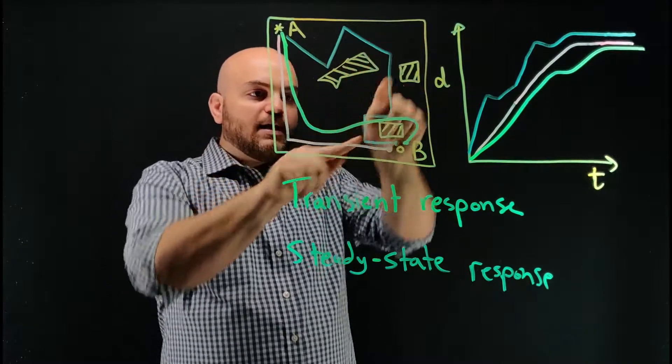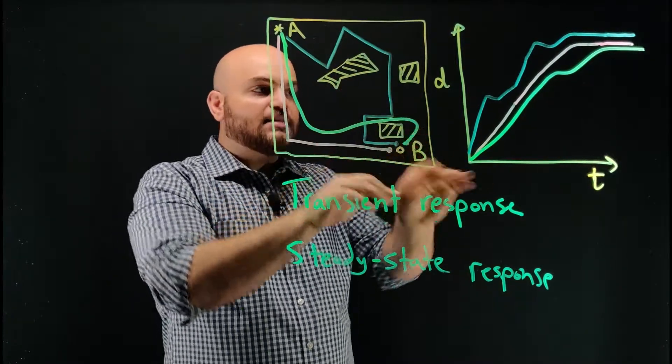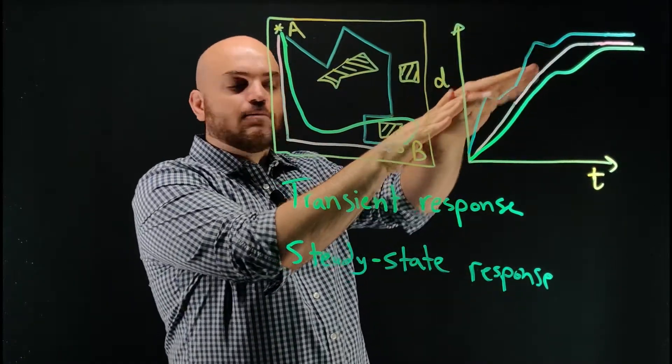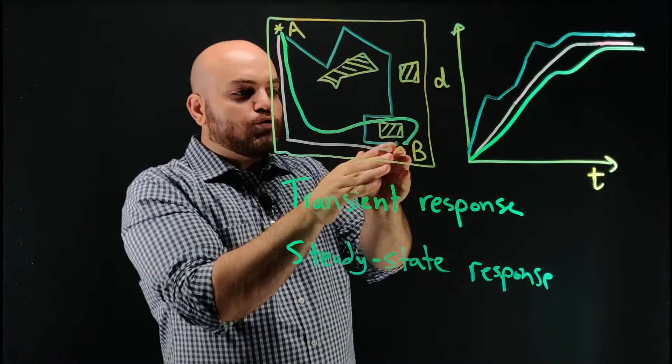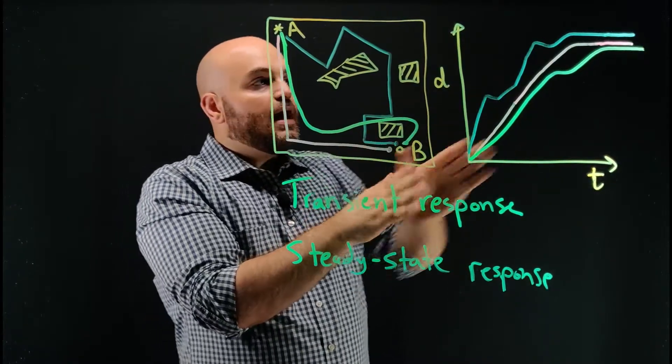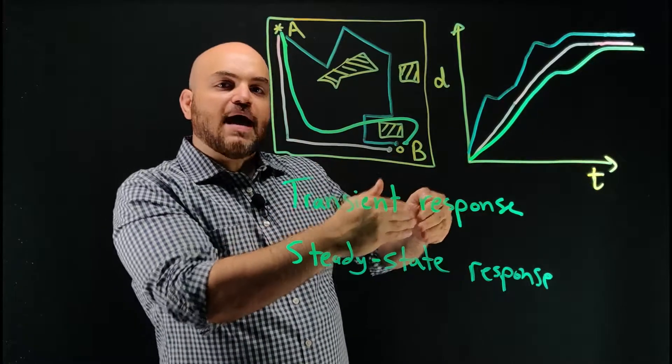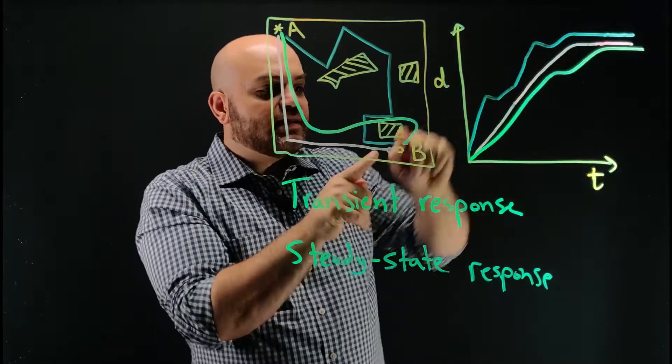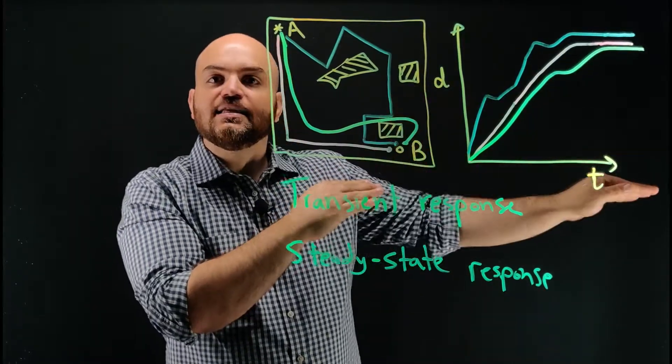So these motions right here, these traced out paths, that's the transient response of the system while trying to go to the location B. And then after some time has passed, they stay at this location, that is the steady state response.